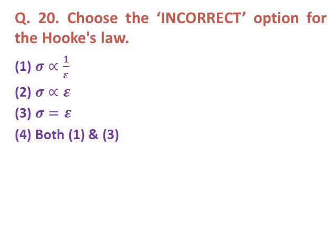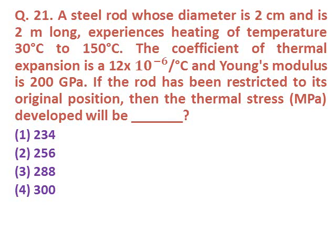Question nineteen: Choose the incorrect option for Hooke's law. Option one: stress is inversely proportional to strain. Option two: stress is directly proportional to strain. Option three: stress equals strain. Option four: both one and three. The incorrect options are one and three, so option four is correct. Option two is the correct form of Hooke's law.